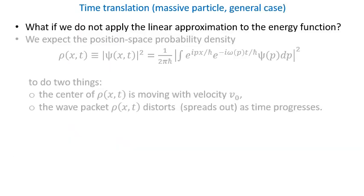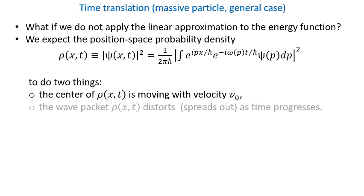But what if we do not apply the linear approximation? Then we can expect that the exact probability density will be as follows. The center of the wave packet will still move with velocity V0. But the shape of the packet will gradually transform. The wave packet will spread out.